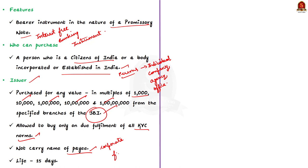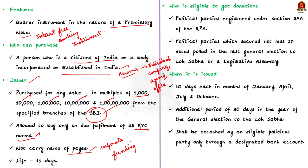Electoral bonds would have a life of only 15 days, during which they can be used for making donations only to political parties registered under Section 29A of the Representation of People Act, and which secured not less than 1% of the votes polled in the last general election to the Lok Sabha or the State Legislative Assembly.